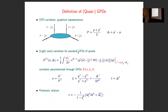Now let's get to the second part: GPDs. I use the standard symmetric frame. The operator definition for the standard GPDs is the same as for PDFs; the only difference is that here we have different momenta, which introduces a dependence on the momentum transfer. These objects are parameterized in terms of the GPDs with variables x — the average plus-momentum fraction — xi, and t.